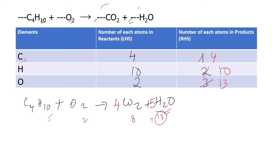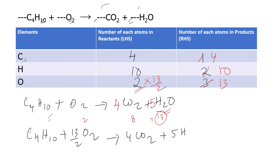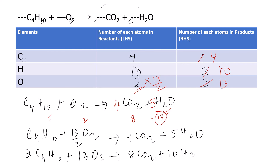To get thirteen oxygen atoms on the reactant side, I write the coefficient 13/2 in front of O₂: C₄H₁₀ + 13/2 O₂ gives 4CO₂ + 5H₂O. To eliminate the fraction, I multiply throughout by 2, giving the final balanced equation: 2C₄H₁₀ + 13O₂ gives 8CO₂ + 10H₂O.